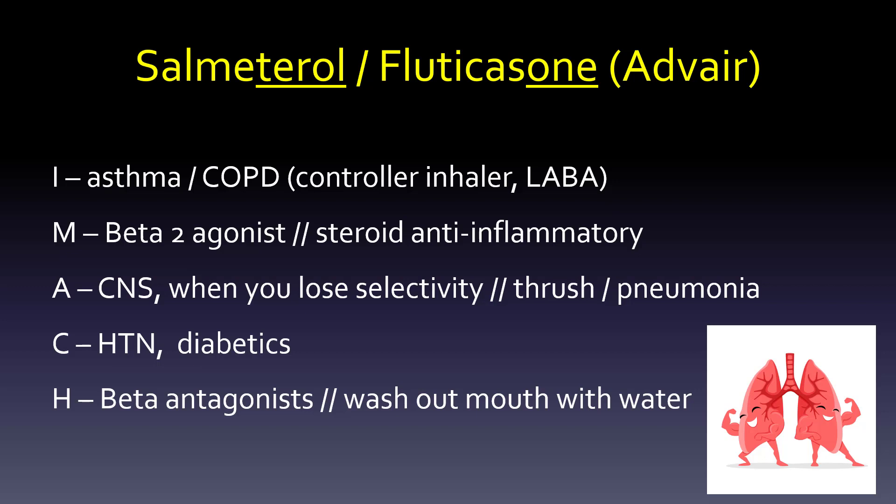Hypertension is also a consideration — again, beta-1 effects if you lose selectivity. For diabetics, adding any kind of steroid is going to cause hyperglycemia, because when your body senses a steroid, it anticipates an event and raises blood sugar — obviously an issue if you're diabetic. We want to watch out for beta antagonists. And here we want to wash the mouth out with water, not swallow but expectorate, to avoid thrush.